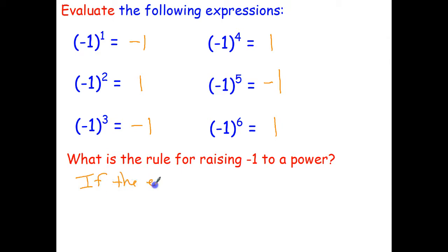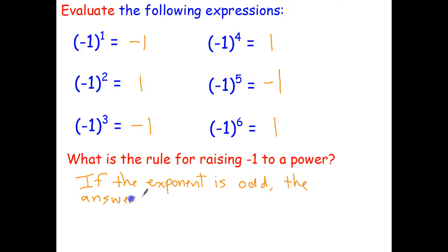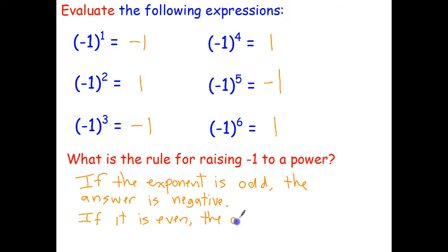So if the exponent or index is odd, the answer is negative. If it is even, the answer is positive 1. So when you're raising negative numbers to powers: if it's an odd index or odd exponent, it's a negative answer; if it's an even index, it's a positive answer.